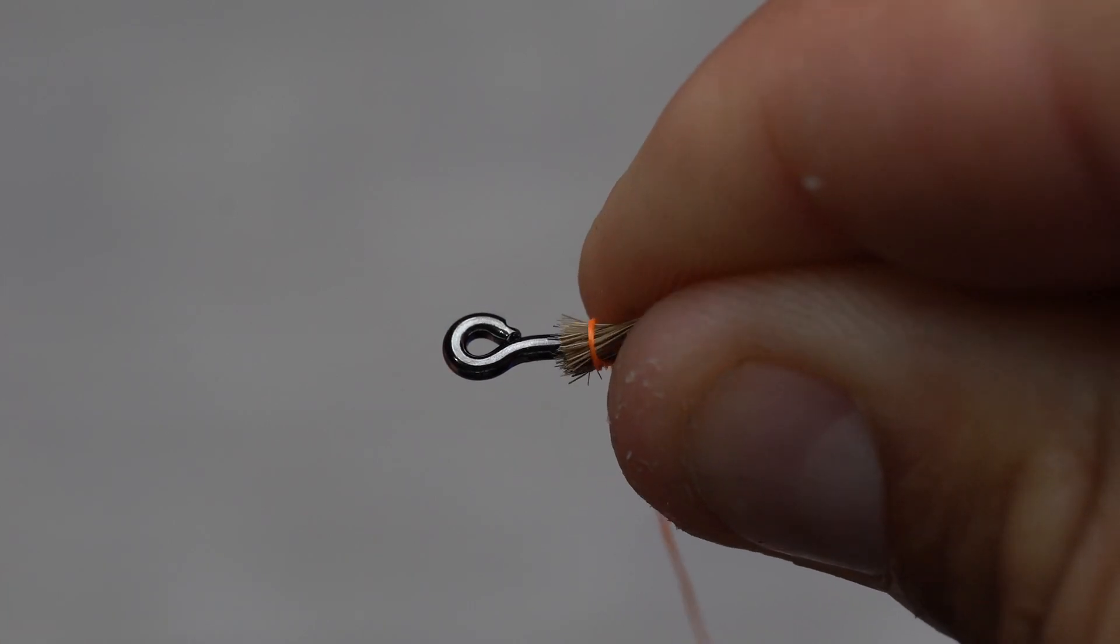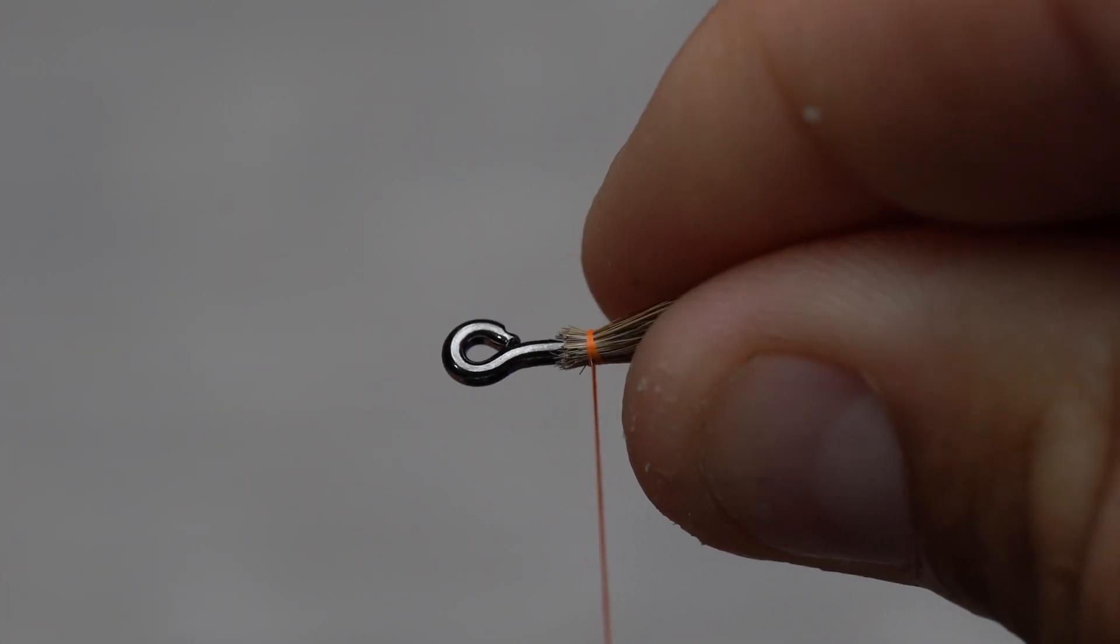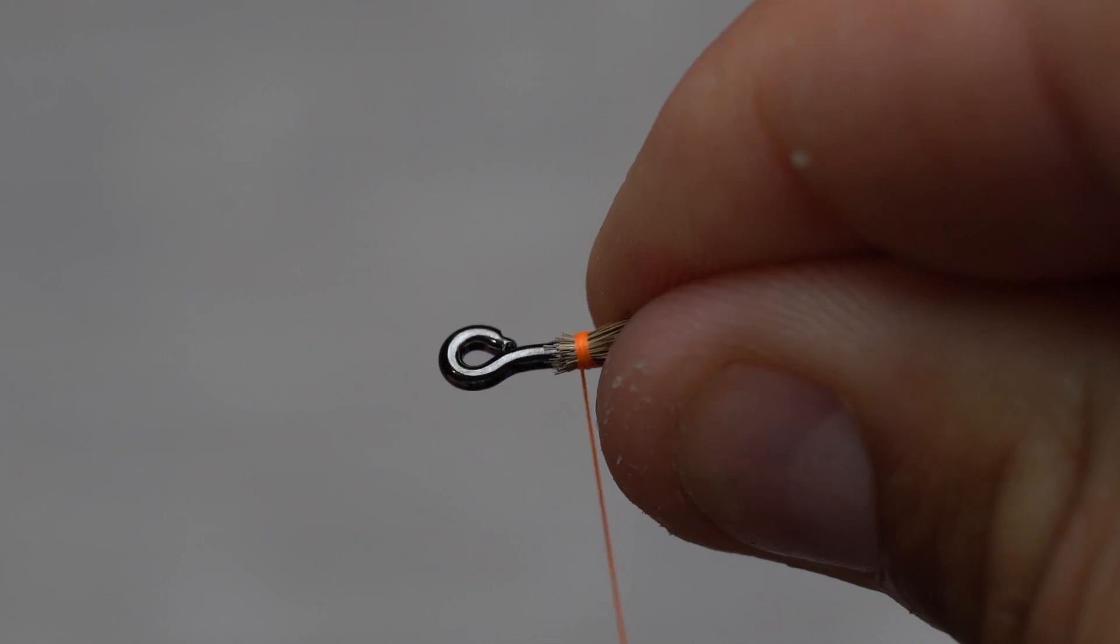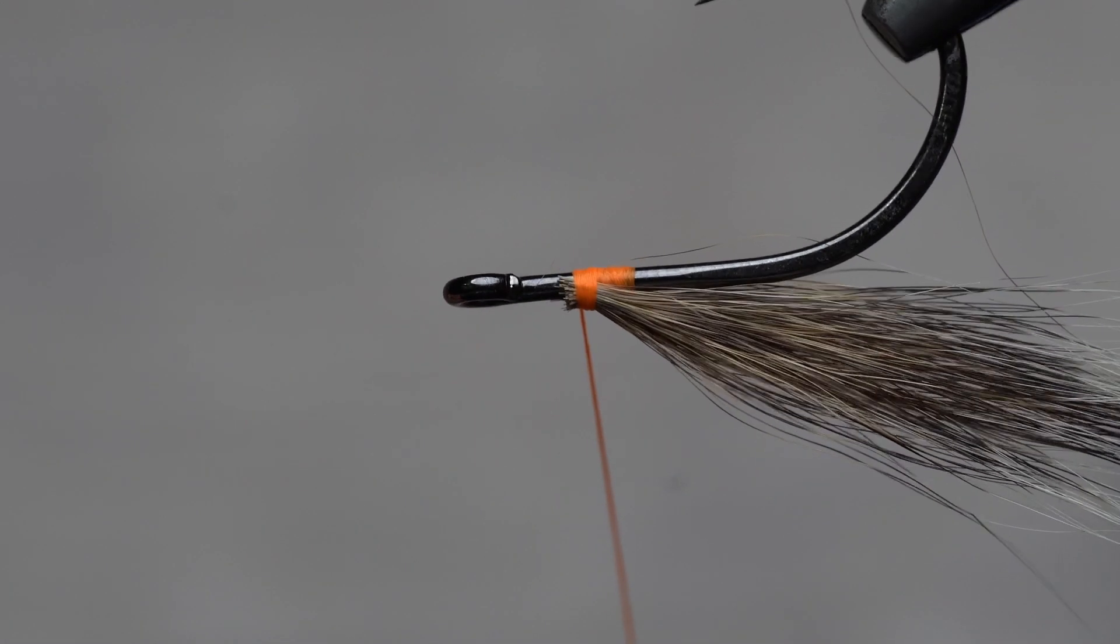When tying material on the top of the hook, keep your index finger tightly pressed on the hook shank. This will allow the material not to slip over when you tighten.